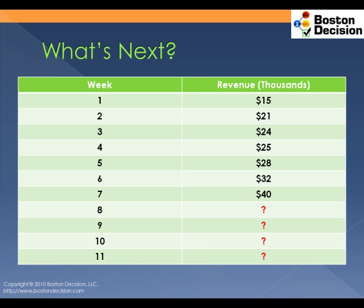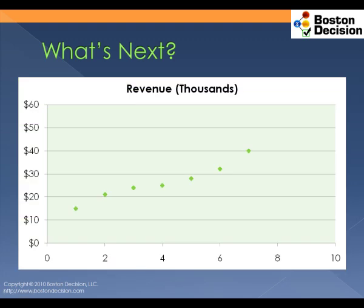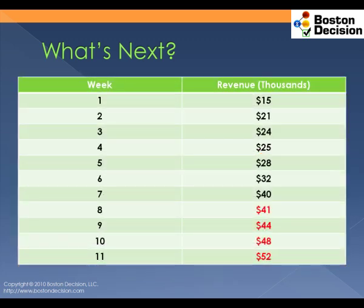You have historic information related to revenue on a weekly basis. Using the historic information, you construct a scatter plot, then add a best fit trend line through that scatter plot and extrapolate forward to see what the revenue will be for the upcoming four weeks. Using that extrapolation from the trend line, you fill in the blanks and see that over the upcoming four weeks your revenue is poised to increase. You present this finding to the board of directors and they are very satisfied.